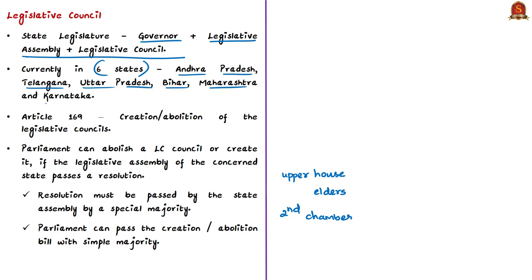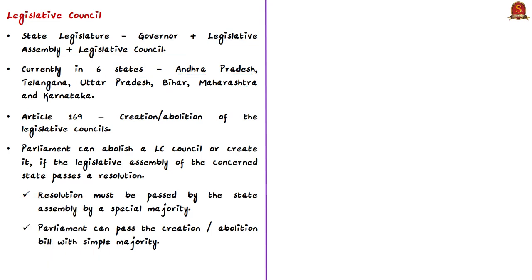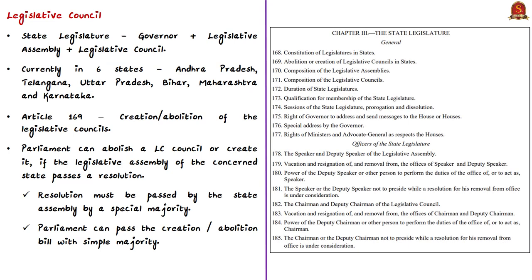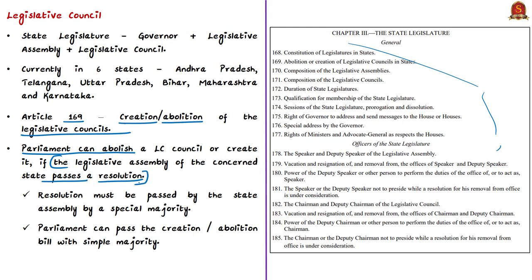As of now, only six states have two houses: Andhra Pradesh, Telangana, Uttar Pradesh, Bihar, Maharashtra, and Karnataka. In a state's political system, the central position is occupied by the state legislature. Articles 168 to 212 of the Constitution deal with the organization, composition, duration, procedures, and other related aspects of the state legislature. Article 169 provides for creation or abolition of legislative councils — Parliament through a law can abolish or create a legislative council.